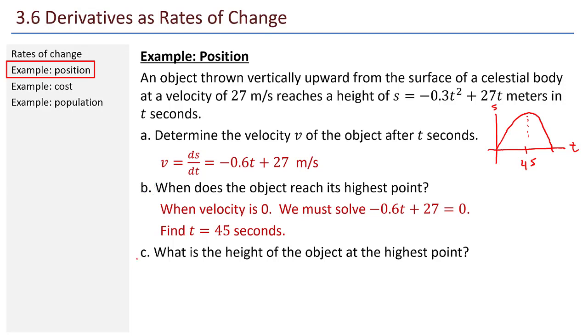So what is the height of the object at the highest point? What do I need to do now to figure that out? This is a question about height, not velocity. So I need to use my height function. And I need to actually evaluate the height function at 45 seconds. So evaluate s when t is 45. And we find that the answer is 607.5. So if I came across, I'd have 607.5 there.